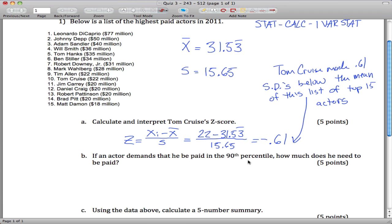If an actor demands to be paid the 90th percentile of this list, how much does he need to be paid? To figure that out, you do our 90th percentile formula, and n is 15. So we get 9 tenths times 16, which equals 14.4.